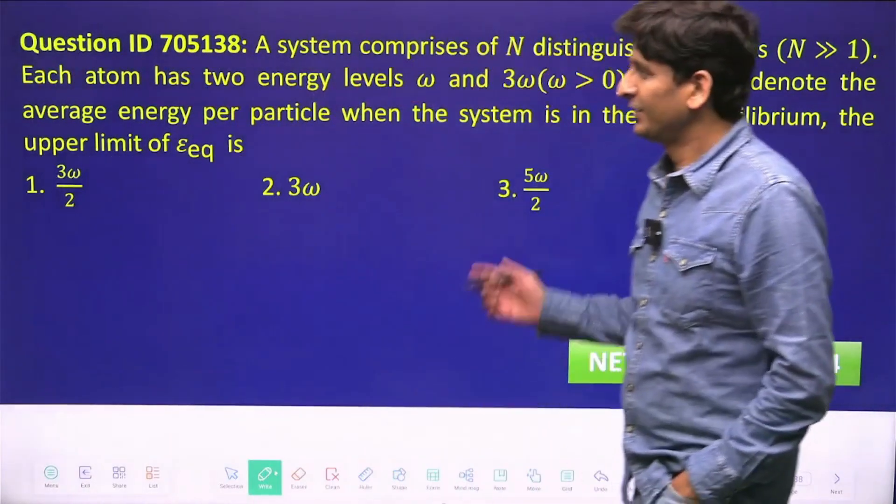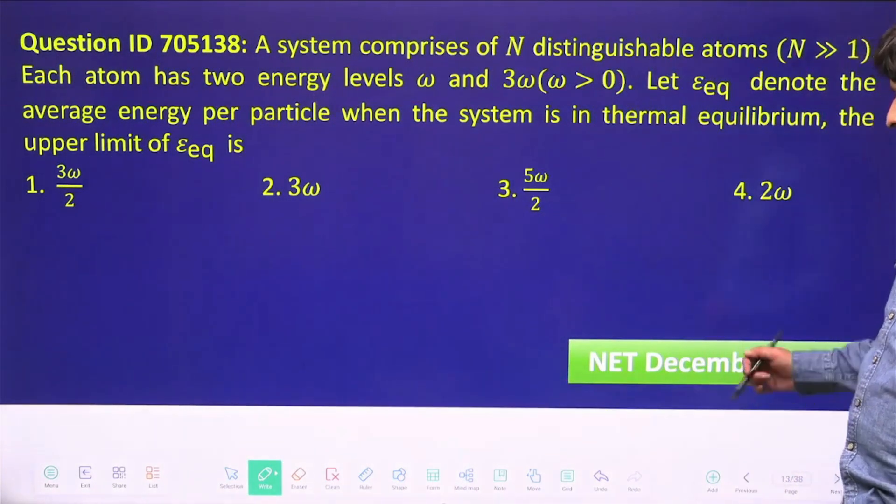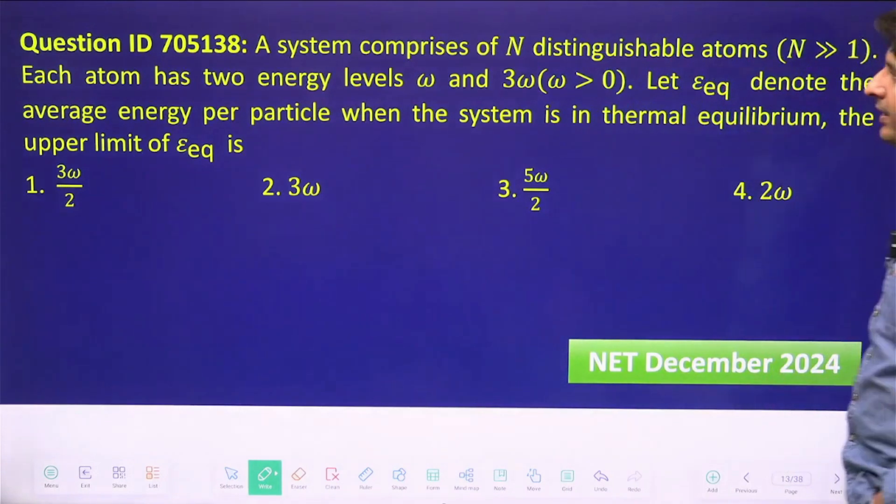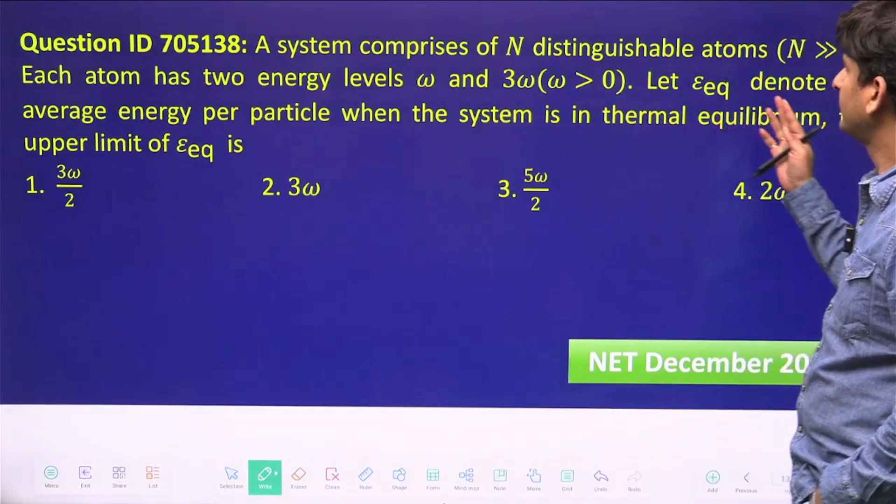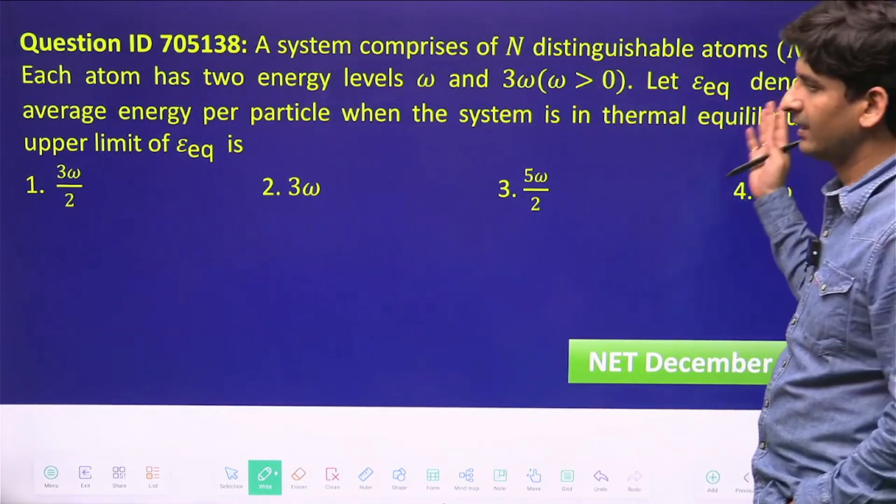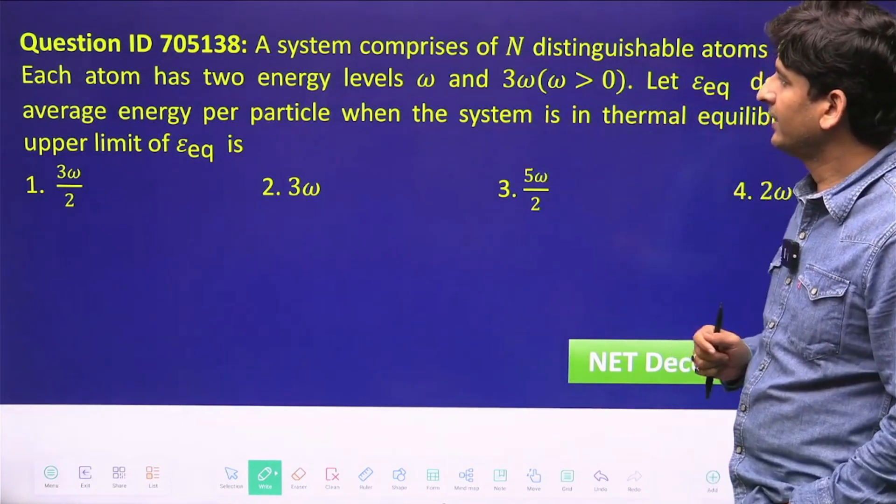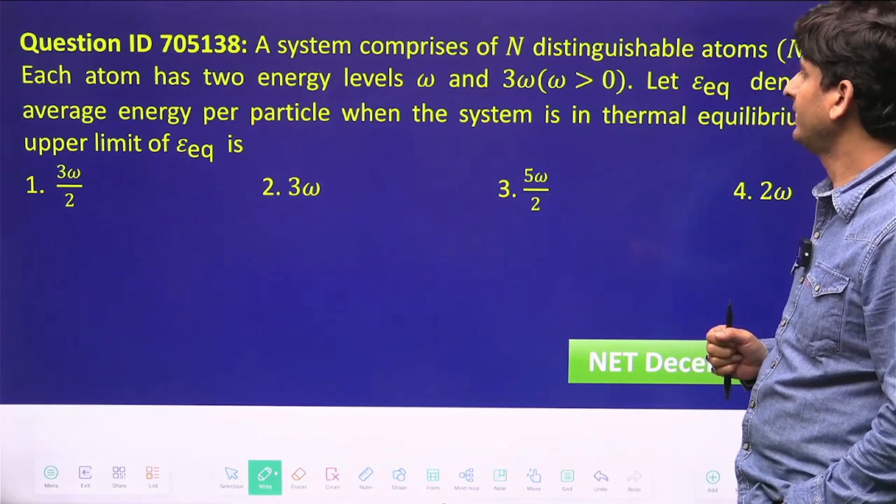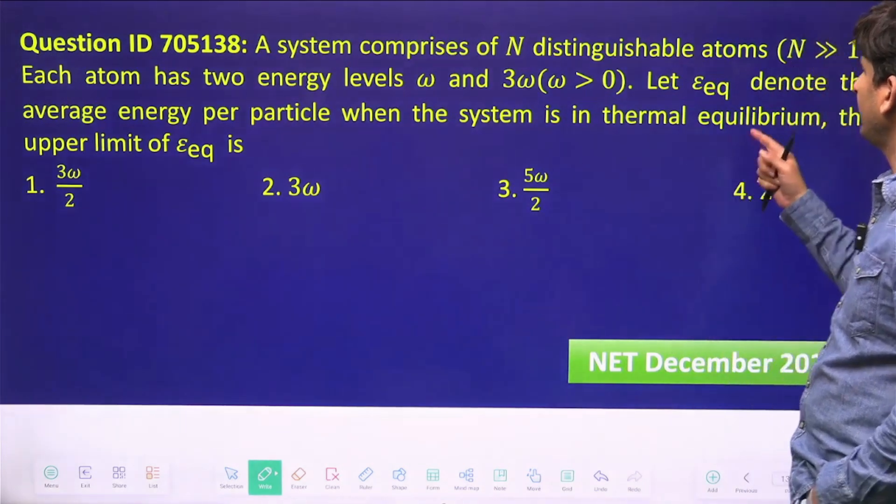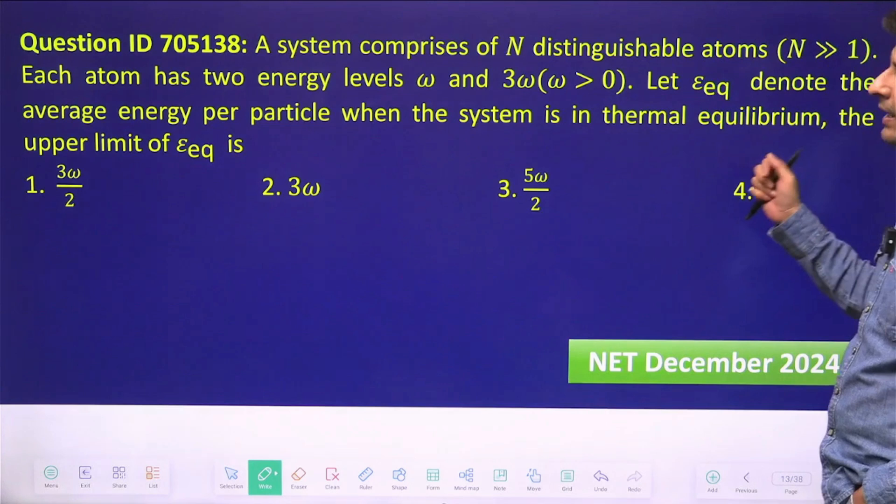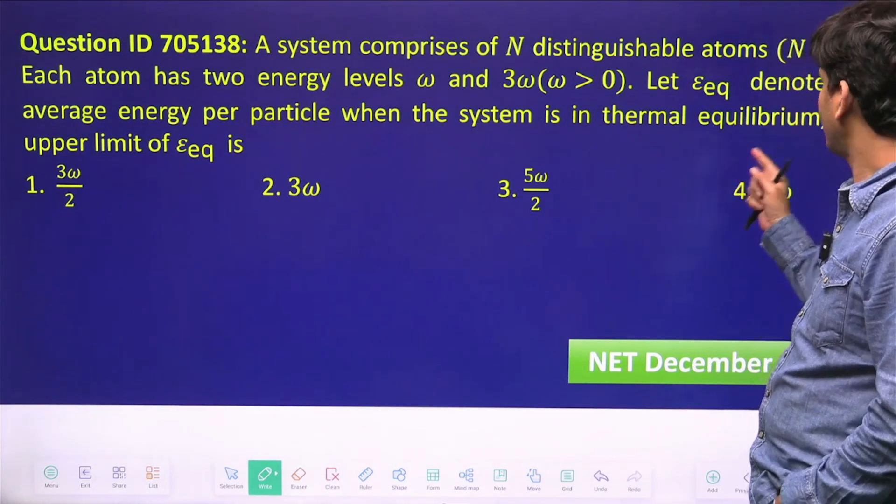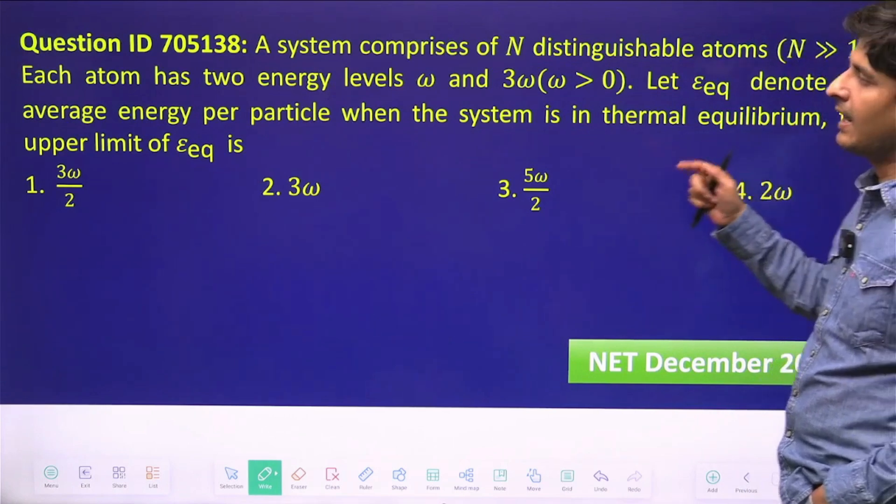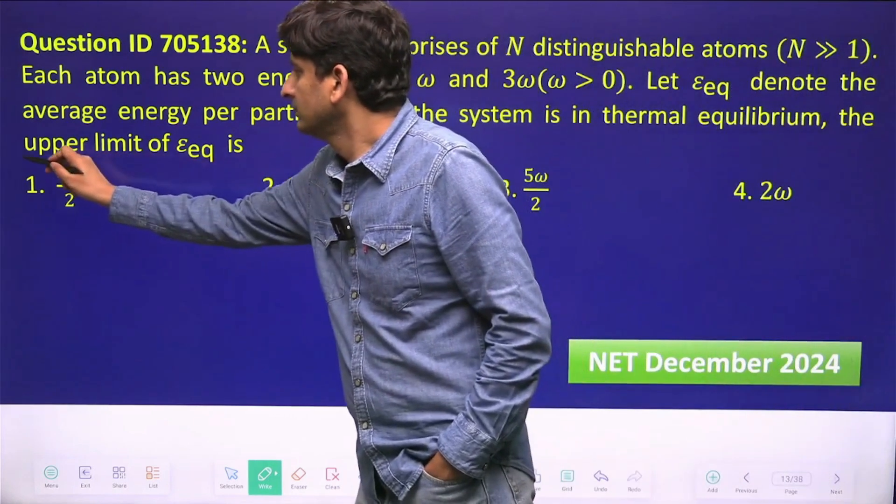Hello friends, let us do this question from statistical mechanics. This was asked in NET December 2024. A system comprises of N distinguishable atoms, where N is a large number. Each atom has two energy levels omega and three omega.